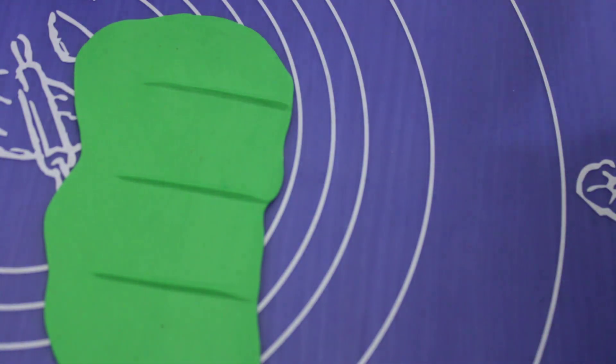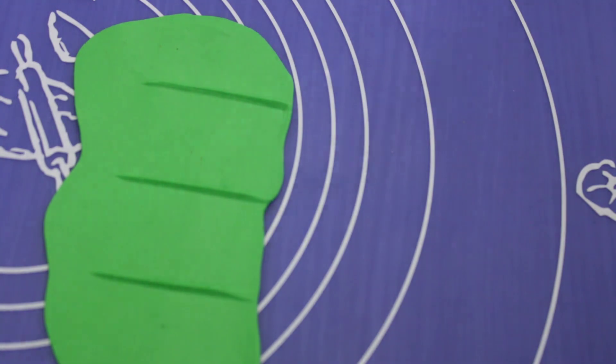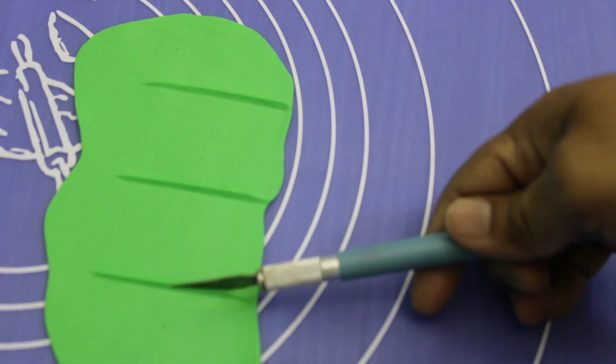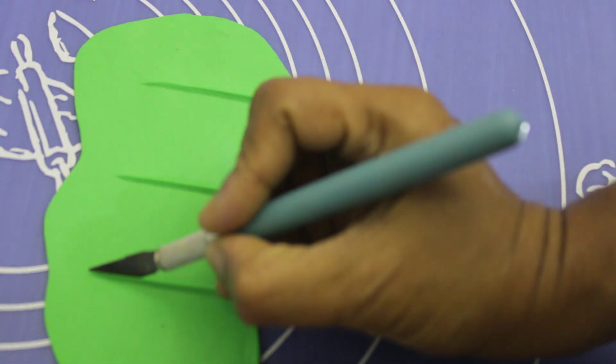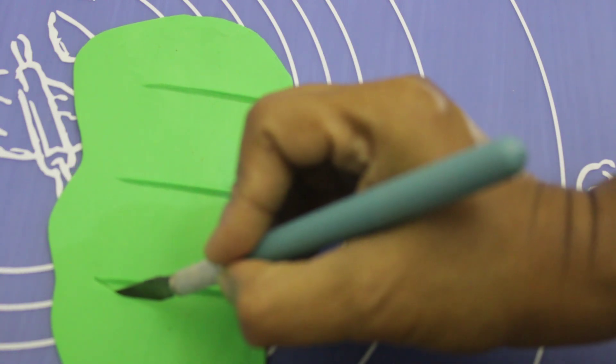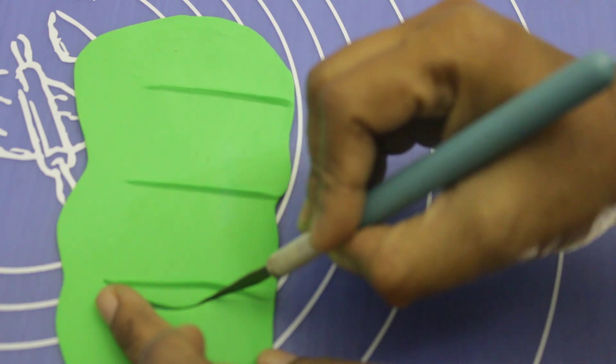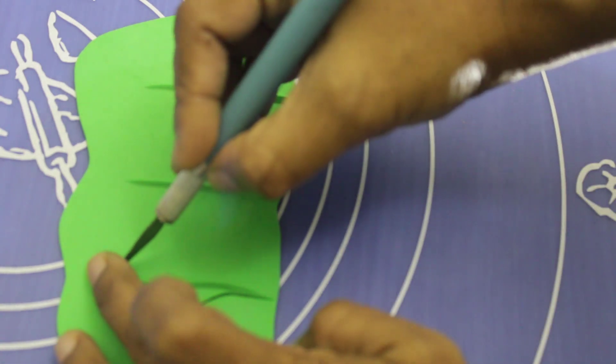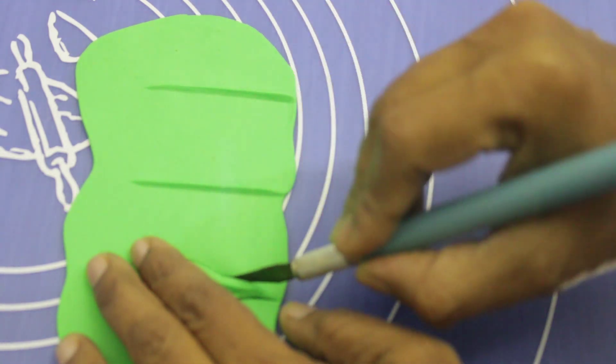First I am making leaves without any cutter. So I am using this craft knife. You can use any small knife for this. What I am doing, I am making the leaf from here and cut it this side. Very easy. You don't need any cutter for this.